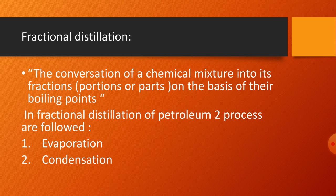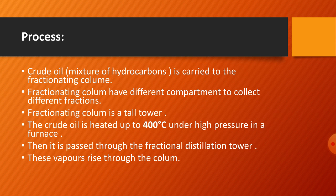Fractional distillation is the conversion of a chemical mixture into its fractions - its smaller portions - on the basis of differences in boiling point. It involves two major processes: first evaporation, followed by condensation. The crude oil, which is a mixture of hydrocarbons, is carried to the fractionating column, which is a tall tower with different compartments to collect different fractions.